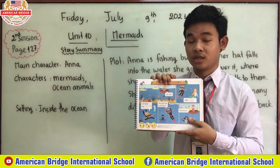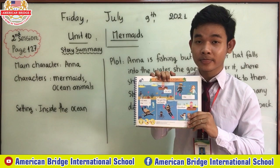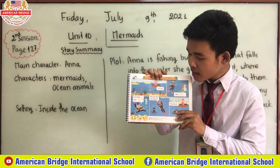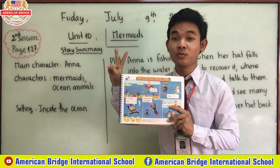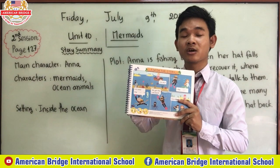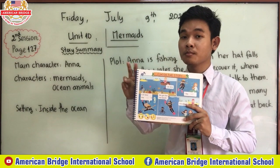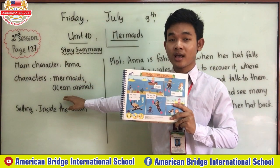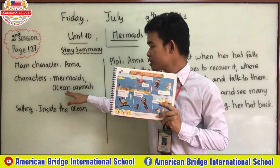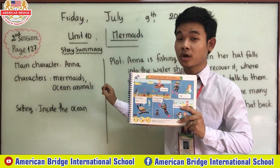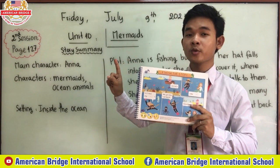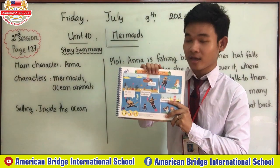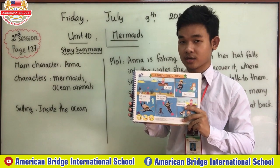Who are the other characters who also play in this story? We have two mermaids — the one with light brown hair and the one with dark brown hair. We also have ocean animals: sea turtle, seahorse, crab, squid, and starfish. These are our characters.